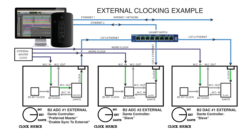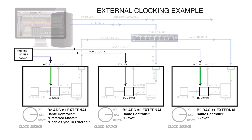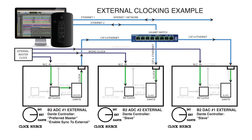In Figure 14 on page 15 of the manual, you can see the external clocking example. Here we have an external clock sending word clock out via B and C cables to each of our B2 Bombers: B2 ADC number 1, B2 ADC number 2, and B2 DAC number 1. Please note that all three B2 Bombers are set to external clock source on the front panel. Word clock is sent to B2 ADC number 1, then the clock control sends clock to the Dante card, which is set to master. This card then transmits clock to the Dante network through the gigabit switch. Please note that the Dante cards in B2 ADC number 2 and B2 DAC number 1 are receiving their clock via the Dante network, with both Dante cards in slave mode.